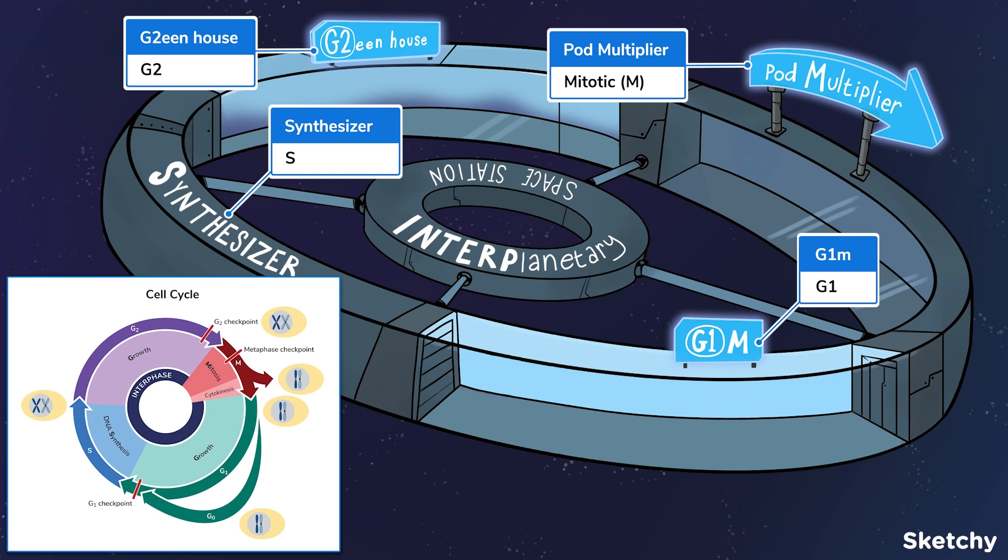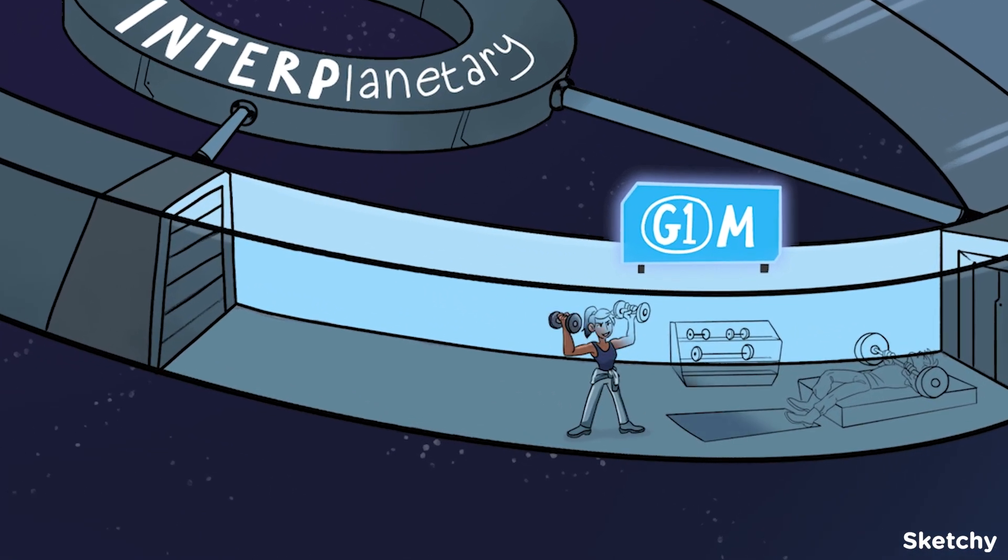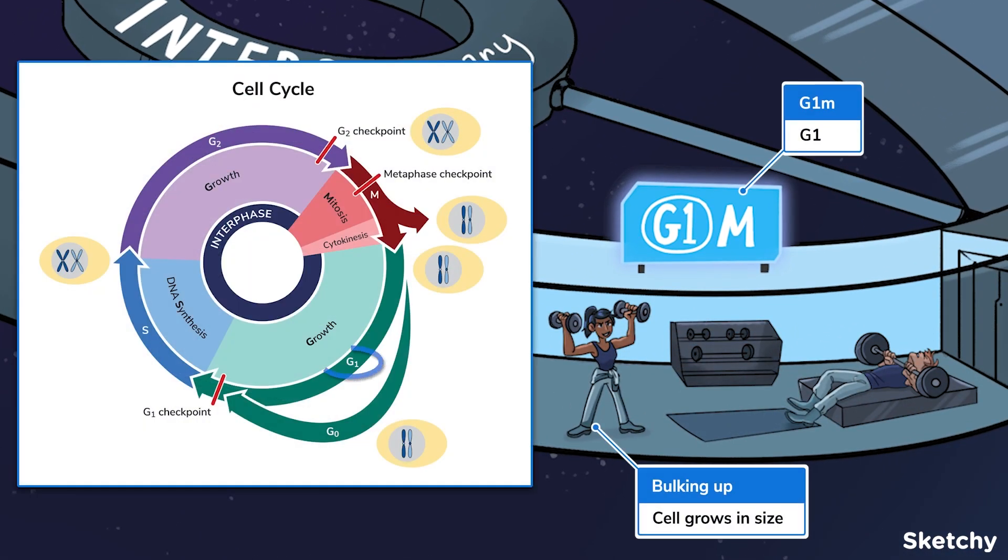Alright, let's take a tour of the facilities. Here at the gym is where nerds like myself get swole. G1, the first gap or growth phase, is essentially a gym for cells. G1 is usually the longest stage of the cell cycle. In G1, the cell ramps up protein synthesis while increasing its size and number of organelles to prepare for DNA replication.